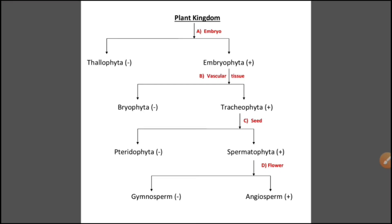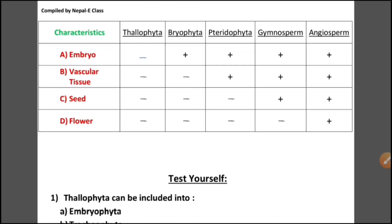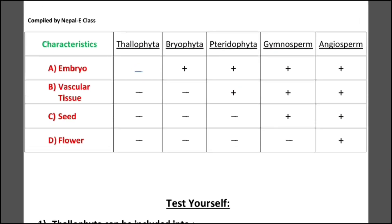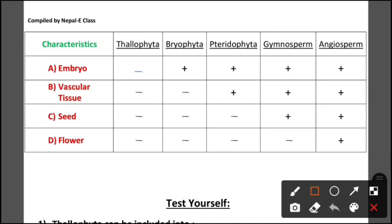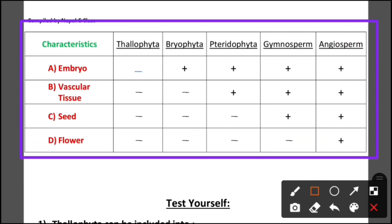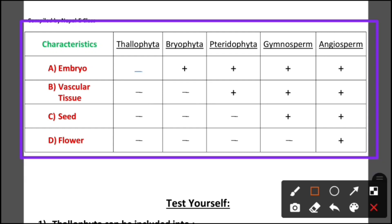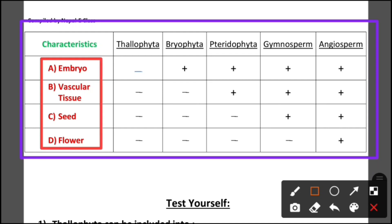Let's continue with the table. As you can see on the screen, on the left-hand side we have the four bases of classification: embryo, vascular tissue, seed, and flower.